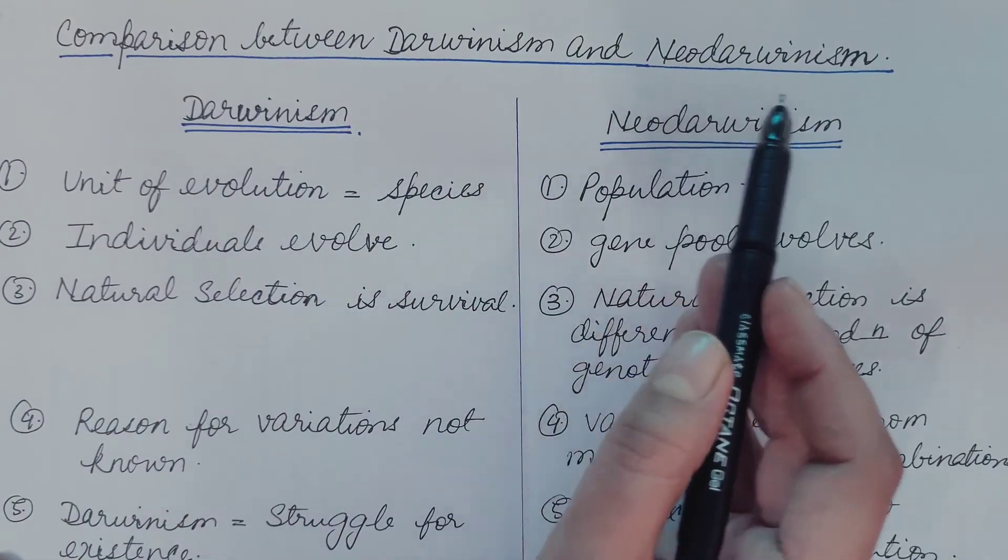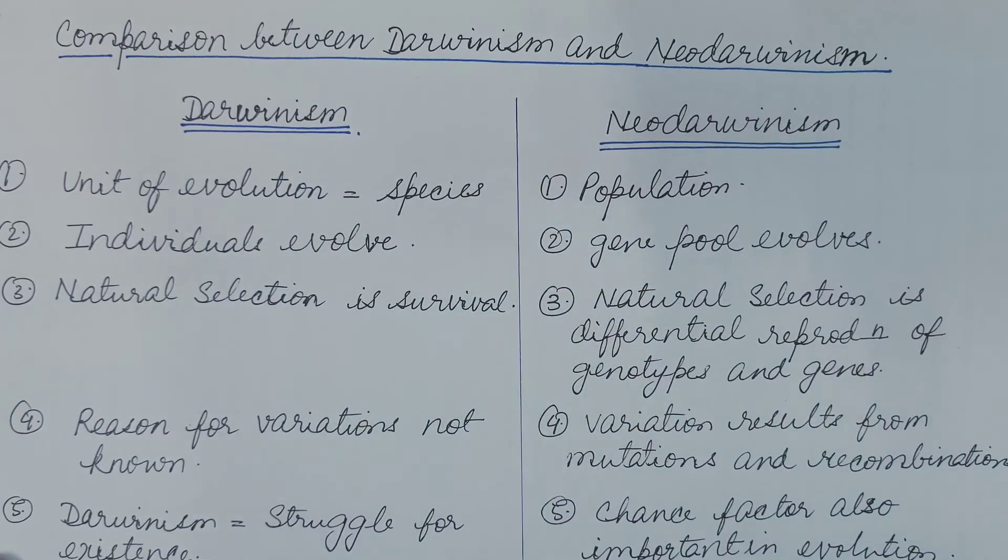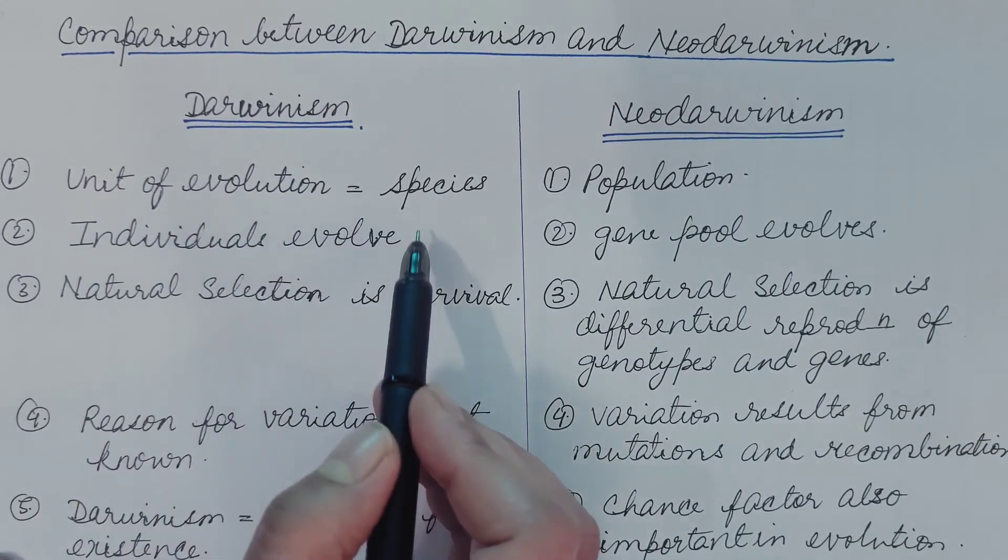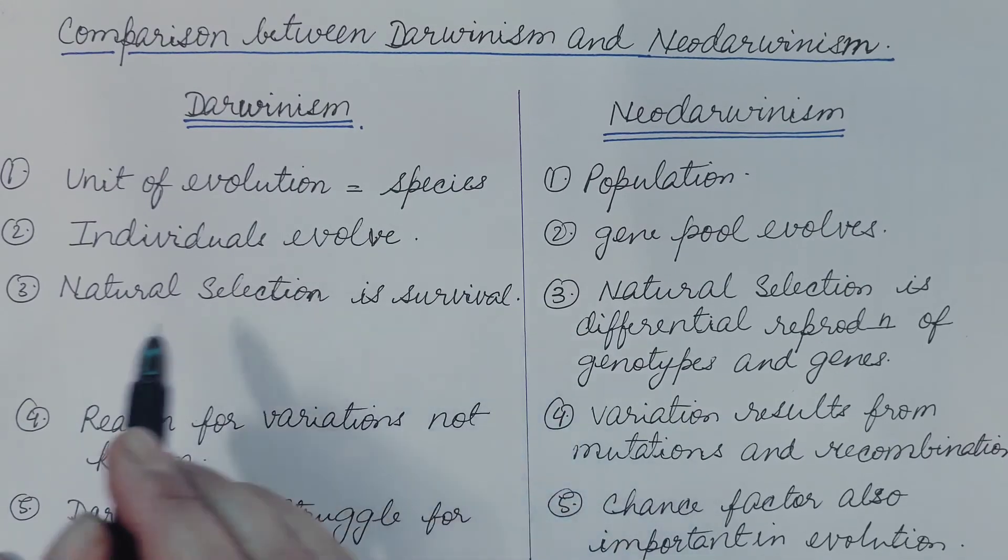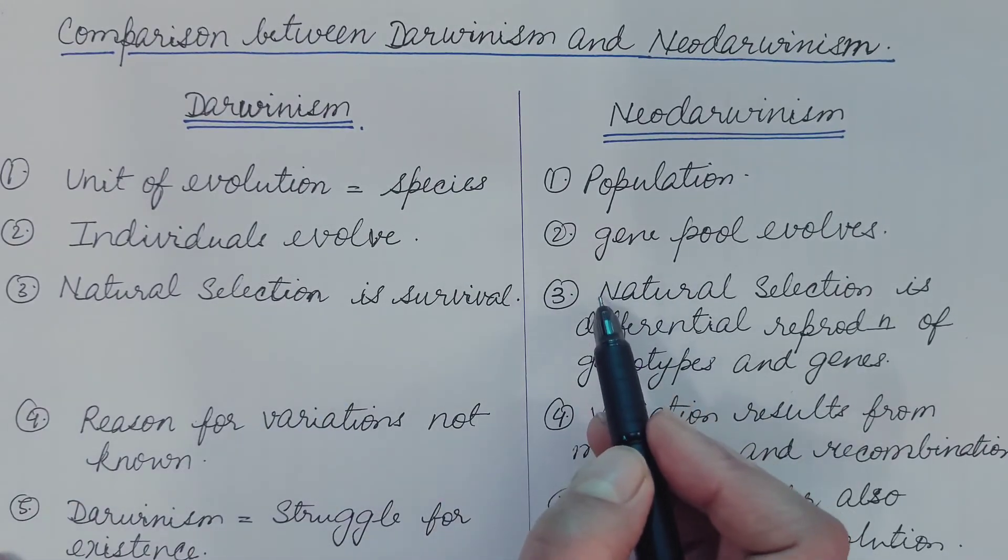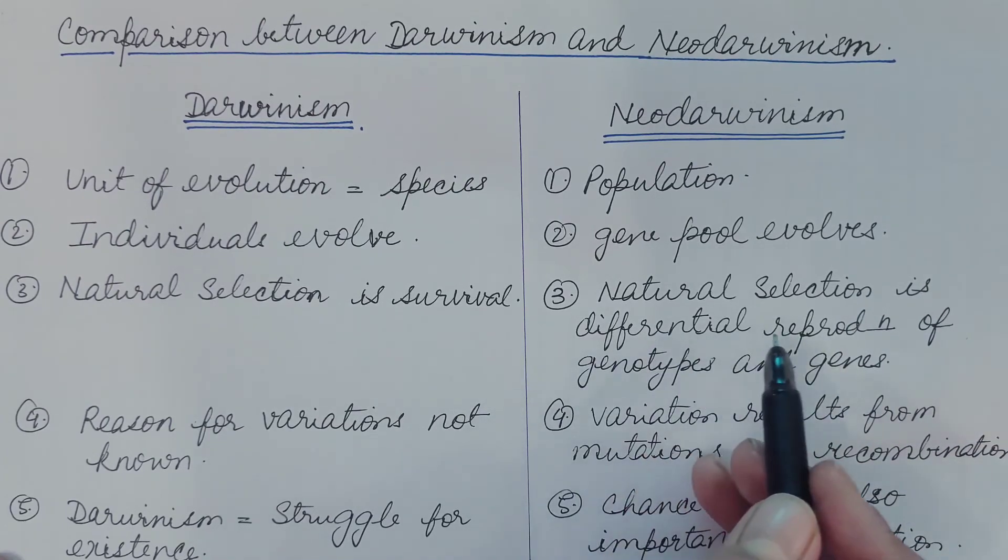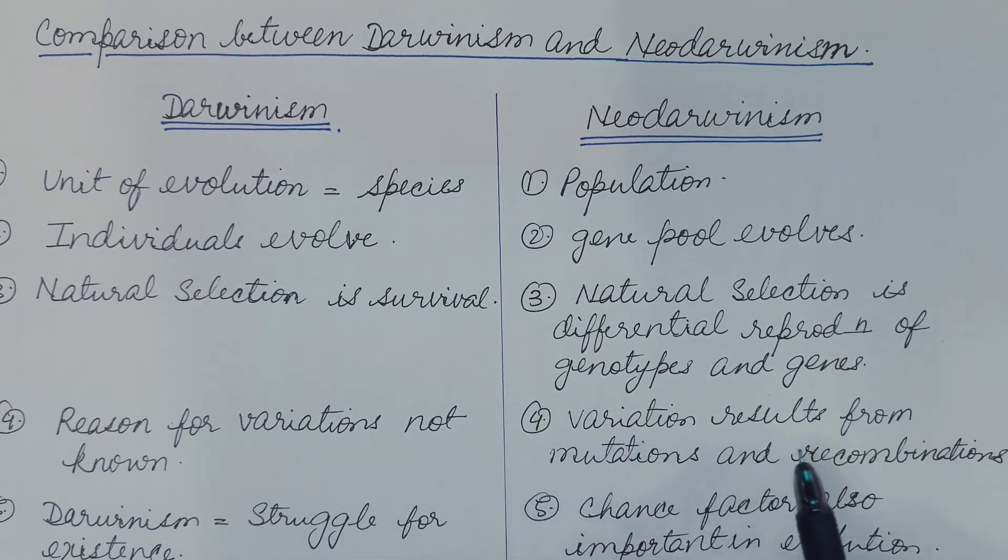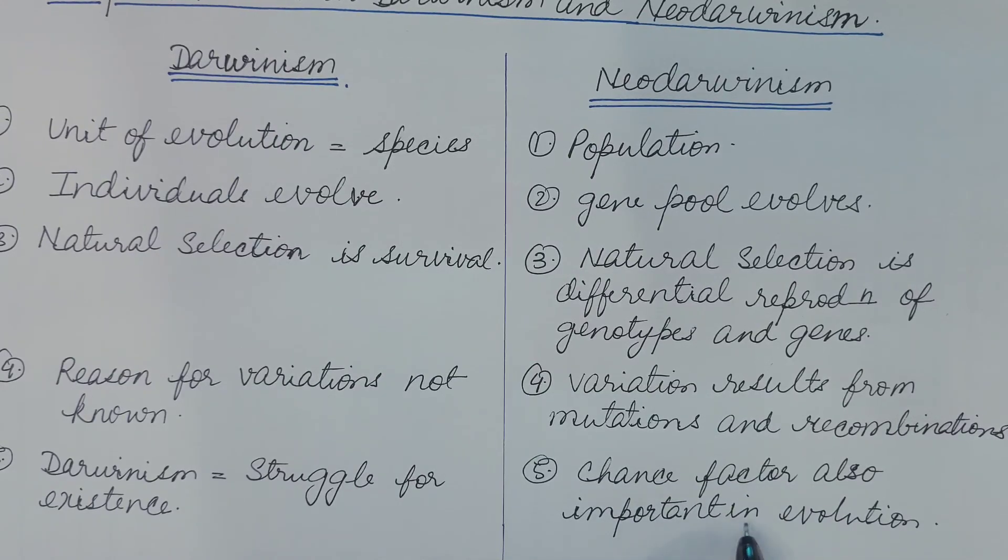Now let us see comparison between Darwinism and Neo-Darwinism. The basic theory of Darwinism is natural selection. Neo-Darwinism is the advanced form of Darwinism. According to Darwinism, unit of evolution is species but in Neo-Darwinism unit of evolution is population. According to Darwinism, individuals evolve but according to Neo-Darwinism, gene pool evolves. According to Darwinism, natural selection is the survival of the fittest or the better-adapted individual. But according to Neo-Darwinism, natural selection is differential reproduction of genotypes and genes because the adapted individual only reproduces and produces its offspring. In Darwinism, reason for variations are not known but according to Neo-Darwinism, variation results from mutations and recombinations. Darwinism emphasizes on struggle for existence and this causes evolution. According to Neo-Darwinism, chance factor also is important in evolution.